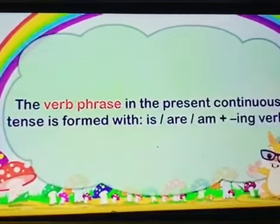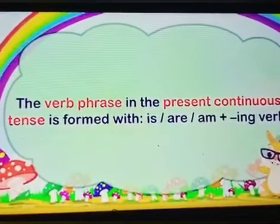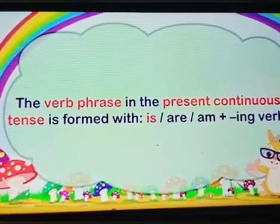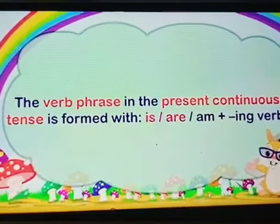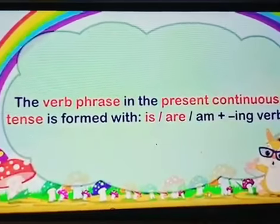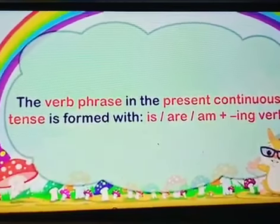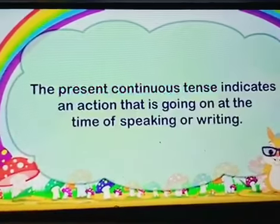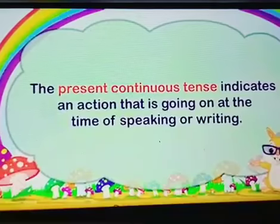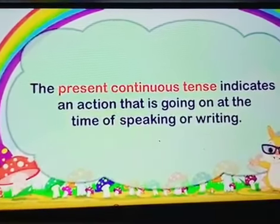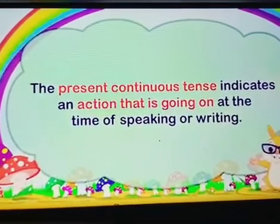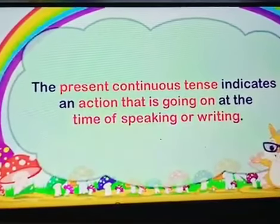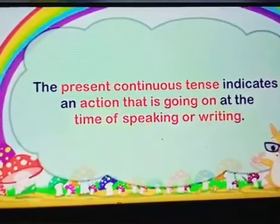The verb phrase in the present continuous tense is formed with is, am or are plus the ing verb. The present continuous tense indicates an action that is going on at the time of speaking or writing.